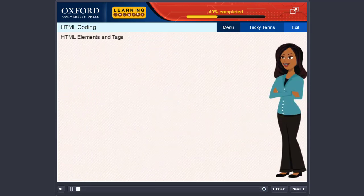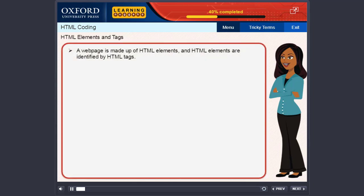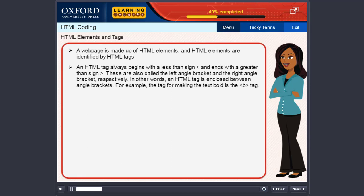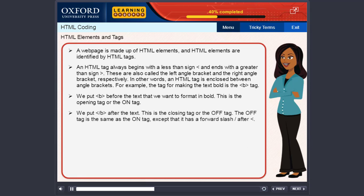HTML elements and tags. A web page is made up of HTML elements and HTML elements are identified by HTML tags. An HTML tag always begins with a less than sign and ends with a greater than sign. These are also called the left angle bracket and the right angle bracket respectively. In other words, an HTML tag is enclosed between angle brackets. For example, the tag for making the text bold is the B tag. We put the B tag before the text that we want to format in bold. This is the opening tag or the on tag.